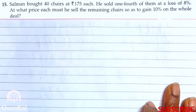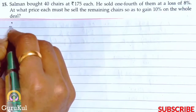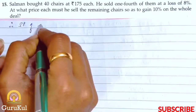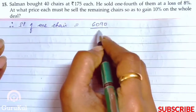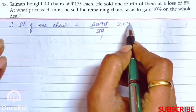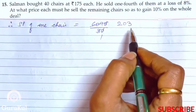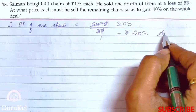The question asked at what price each must he sell the remaining chairs to make a 10% profit. We found the SP of 30 remaining chairs = Rs. 6,090. Therefore, the selling price of one chair = 6,090 ÷ 30 = Rs. 203. This is the answer.